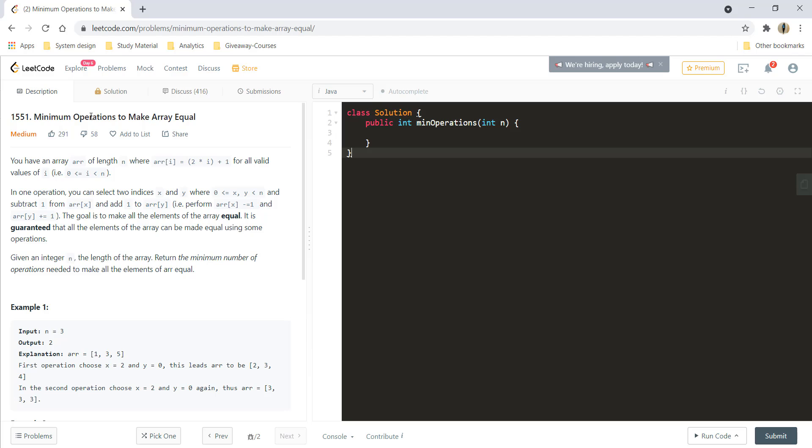In this video, we'll see the question minimum operations to make array equal. You are given an array of length n where array of i is equivalent to 2 into i plus 1 for all the valid values of i.